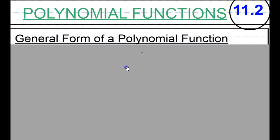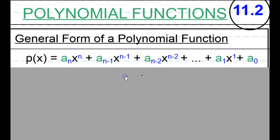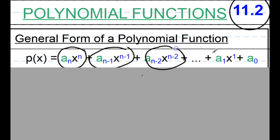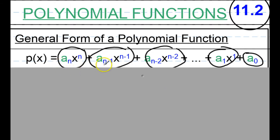So the general form of a polynomial function looks like this. I know some of you may be saying that looks very confusing, but it actually isn't. If we take a look at this, we have it broken up into what we call terms in algebra. All of these have something in common: they represent different power functions. A power function is a constant times the power of x.